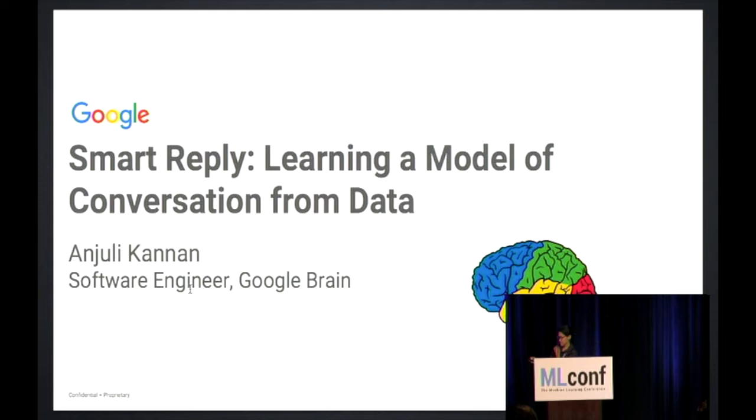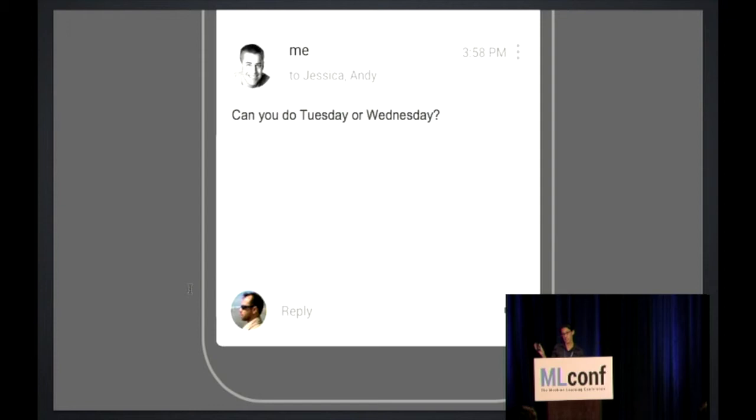A couple of years ago, I was pretty excited when I heard about a feature that some people in the Gmail team wanted to implement. The feature was explained to me as described in this mock. Their idea was, say you take a look at this email: 'Can you do Tuesday or Wednesday?' Now, I didn't receive this email and nor did you, but you could probably guess what the recipient might have responded. They might have said, 'I can do Tuesday' or 'I don't want to do Wednesday' or 'either is good for me.'